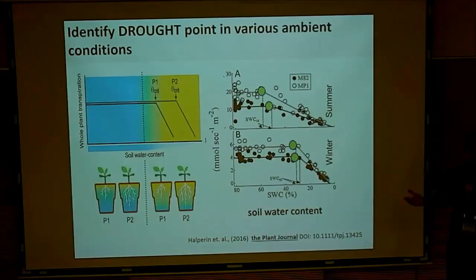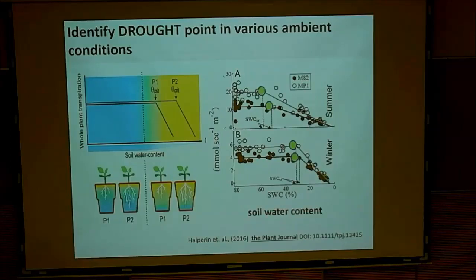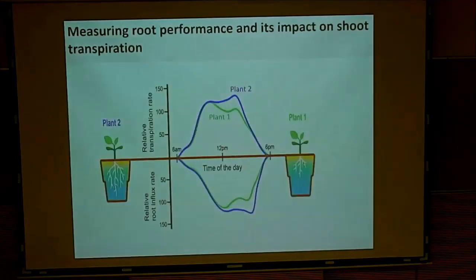This theta-crit point changes dramatically between summer and winter for the same plants, because VPD and light change. That means that any drought experiment must involve measuring this theta-crit point, which we get automatically from the system. The same thing applies to salinity — it's not the EC or millimolar that matters, it's what EC is really the threshold for plant transpiration or any other physiological activity. Transpiration is very sensitive, which is why we use it.